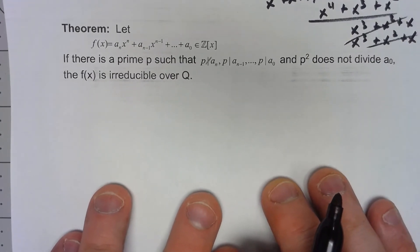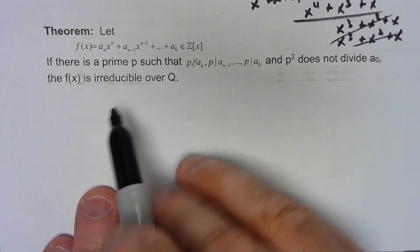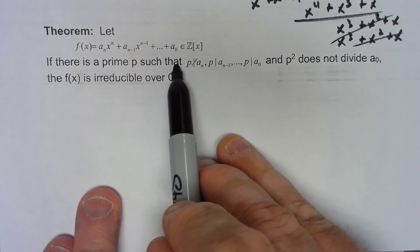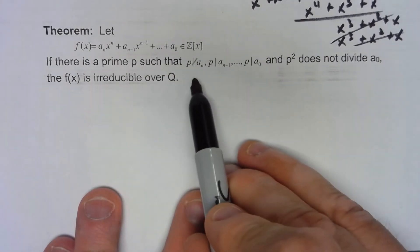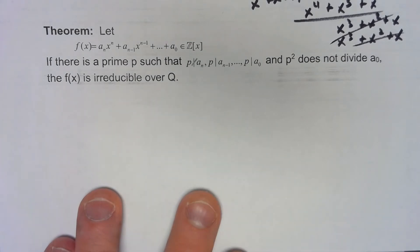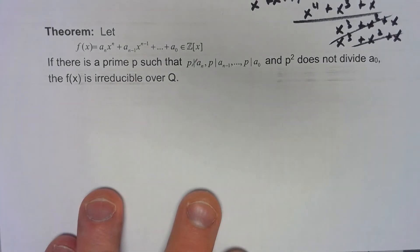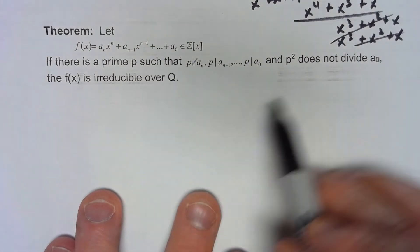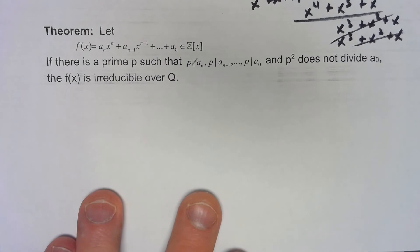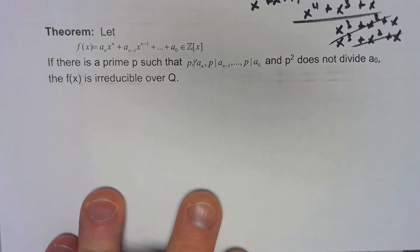Another theorem we've got here is called the Eisenstein criterion. What that says is we've got a polynomial with integer coefficients and we've got a prime that doesn't divide into the leading coefficient, does divide into all the other coefficients, and then finally the constant term, p² does not divide that. Then that polynomial is irreducible over Q.